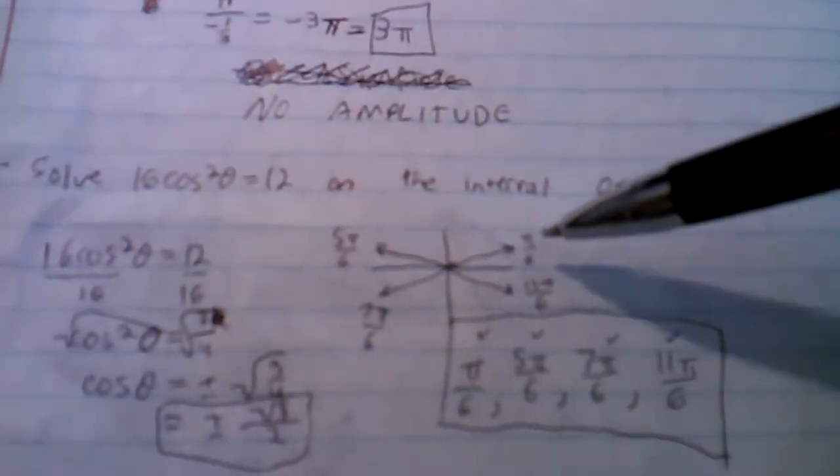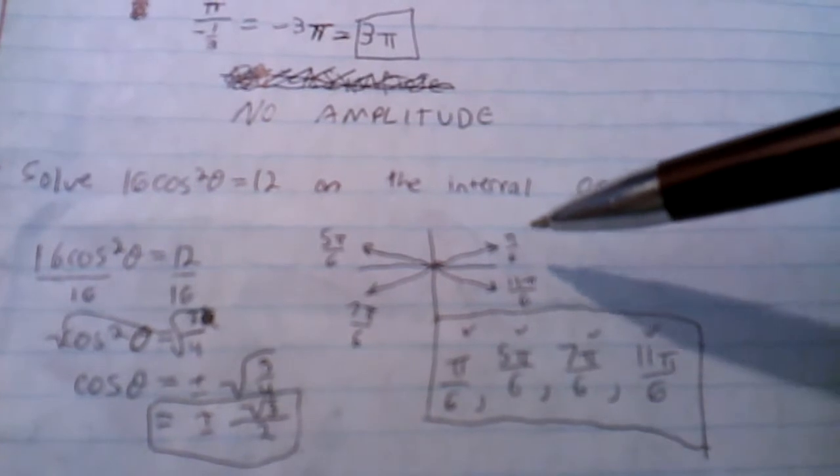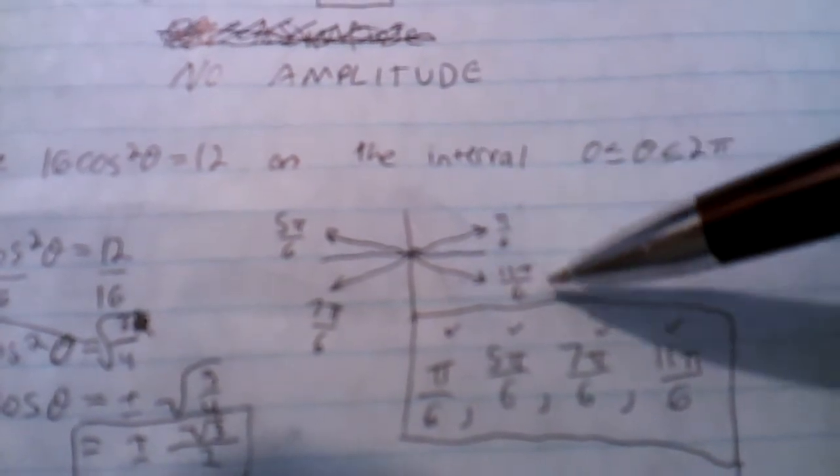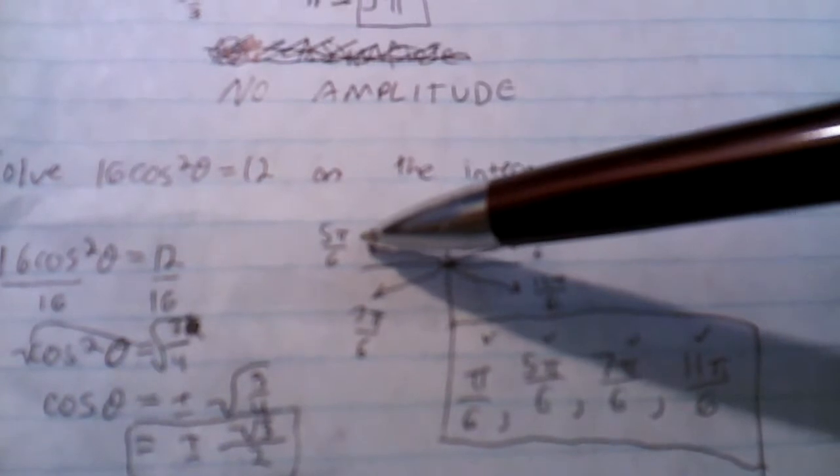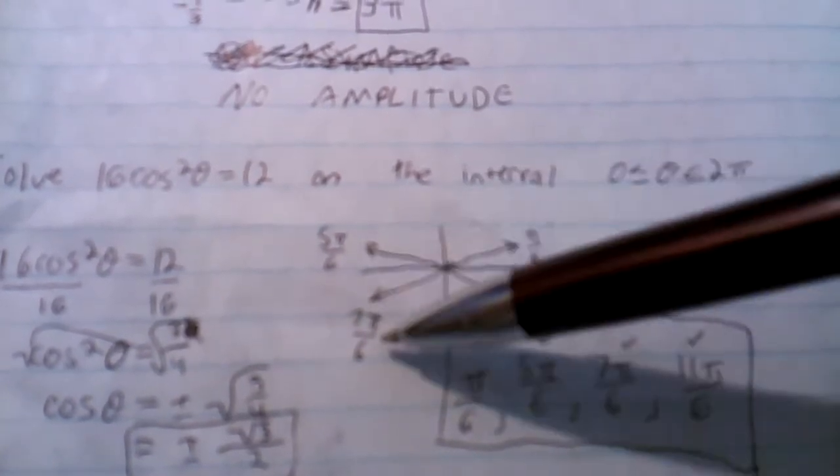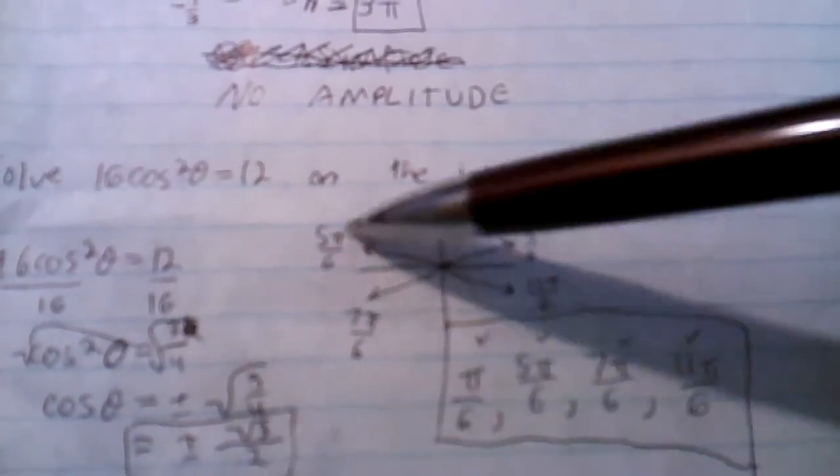You're going to look on the unit circle, and you have to look for negative square root of 3 over 2 and positive square root of 3 over 2. So cosine is going to be positive square root of 3 over 2 at pi over 6 and 11 pi over 6, and it's going to be negative square root of 3 over 2 at 5 pi over 6 and 7 pi over 6. So those are all the solutions.